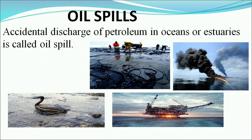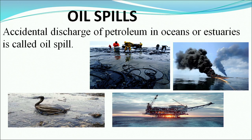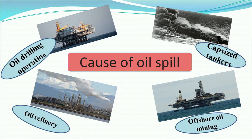Oil spills are our next global issue. Accidental discharge of petroleum in ocean or estuaries is called an oil spill. Causes include drilling in the ocean for oil, oil refinery operations, offshore oil mining, and if oil is loaded in a tanker and shipped across the globe, the tanker may capsize or get stranded in the middle of the ocean, causing oil to spill.